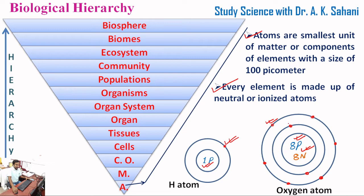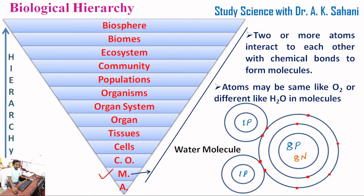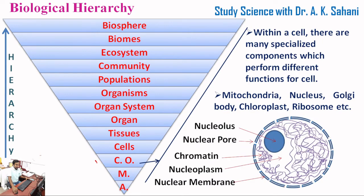The second level is molecule. Two or more atoms interact with each other through chemical bonds to form molecules. Atoms may be the same, like oxygen (O₂), or different, like water (H₂O). As you can see here, in a water molecule there are two hydrogen atoms bonded with one oxygen atom.